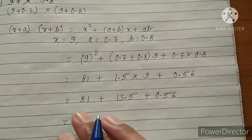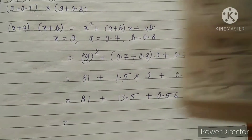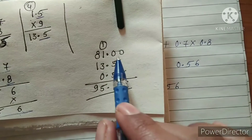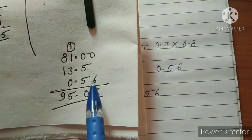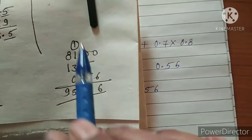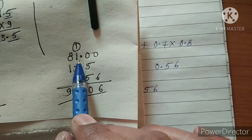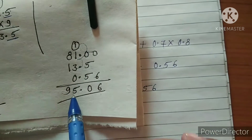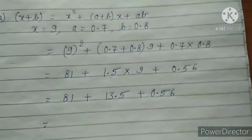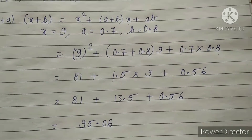Adding 81.00, 13.5, and 0.56: 0 plus 6 is 6; 5 plus 5 is 10, write 0 carry 1; 3 plus 1 plus 1 is 5; 8 plus 1 is 9. The answer is 95.06.